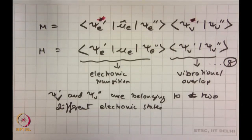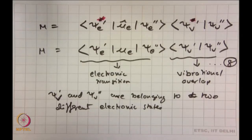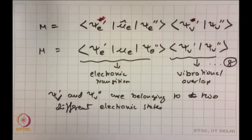The Franck-Condon overlap tells you which two vibrational states — one from the ground state and one from the excited state — are overlapping the most, and that is where the most intense transition would be, because that is where you have the largest overlap in terms of wave functions. If you take the square of this overlap, you get the Franck-Condon factor, which finally determines the intensity of the transition. The intensity is proportional to the Franck-Condon factor, which is the overlap squared.